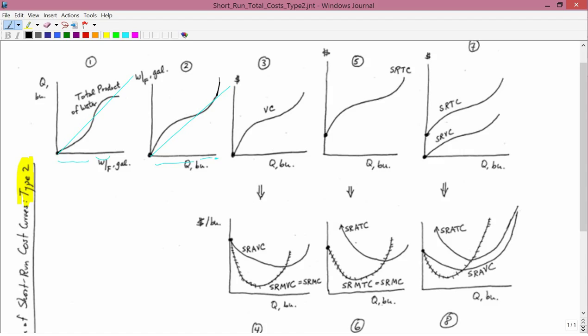To go from graph number 1 to graph number 2, the horizontal axis stays the same. The vertical axis changes from water to dollars. These dollars are variable cost. We could call it short-run variable cost. I just left out SR.